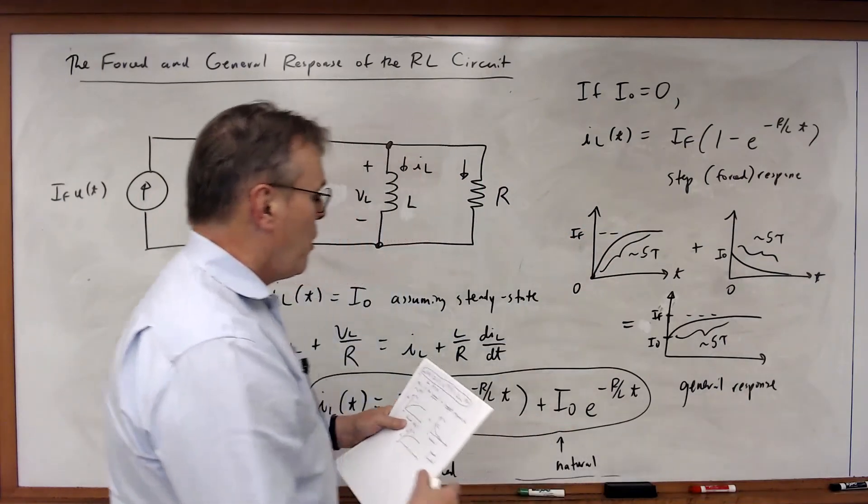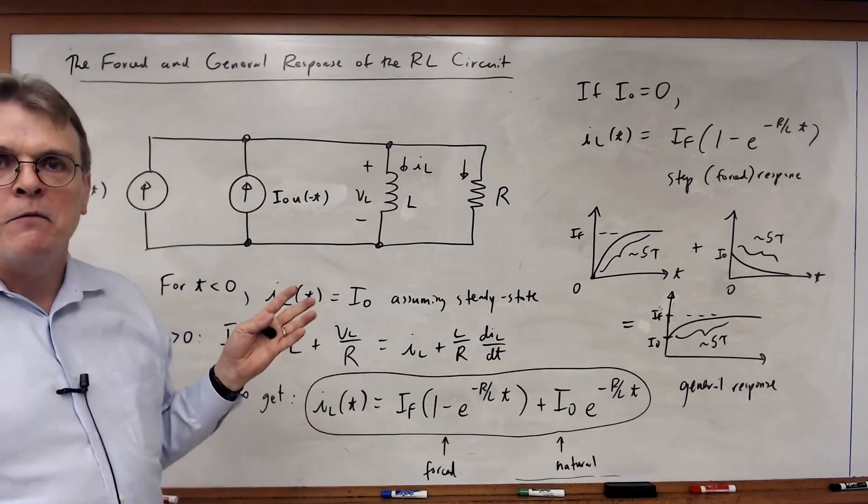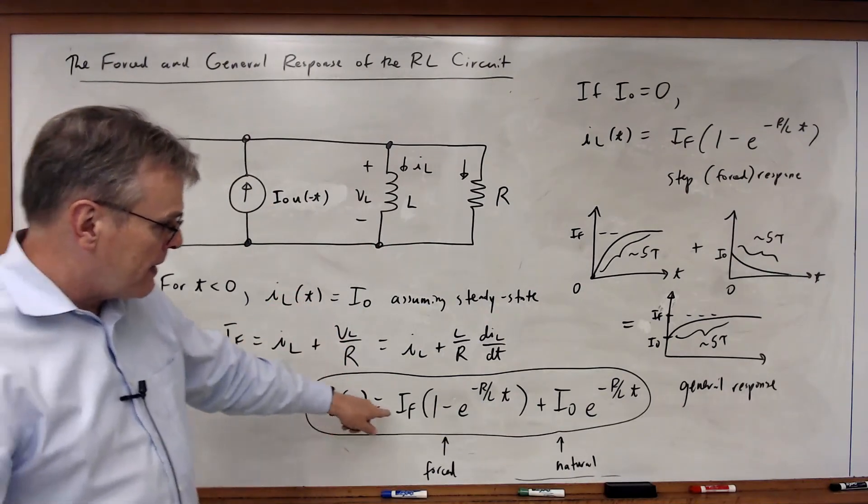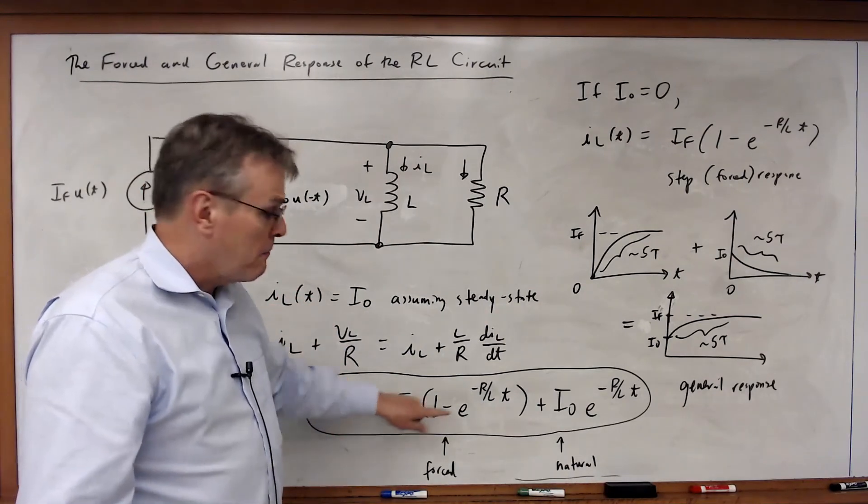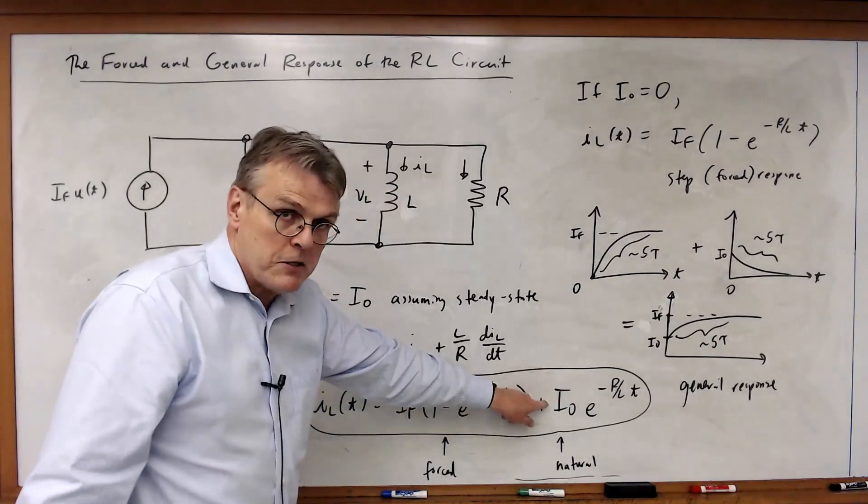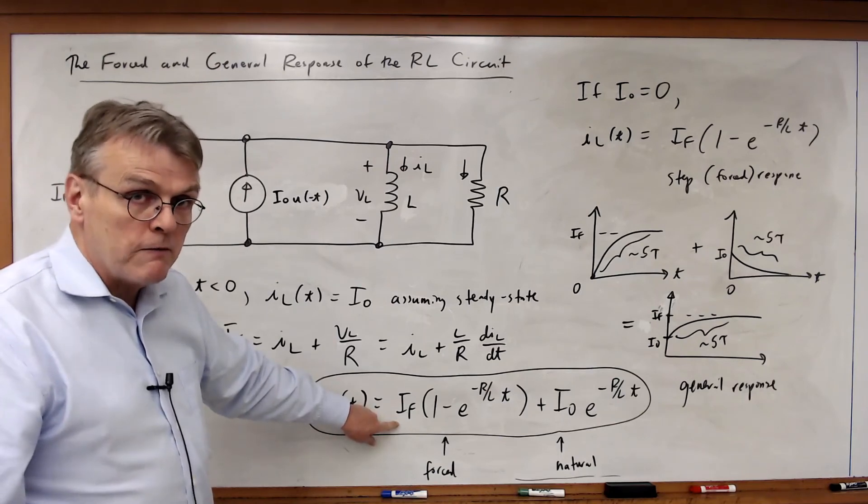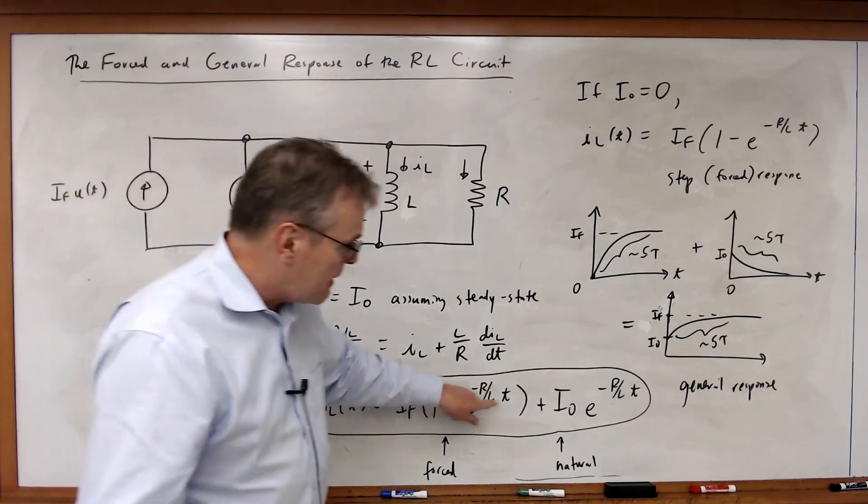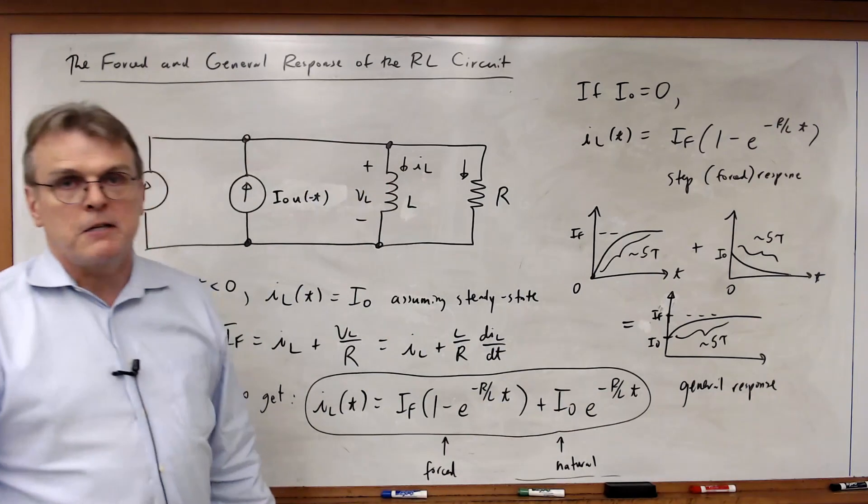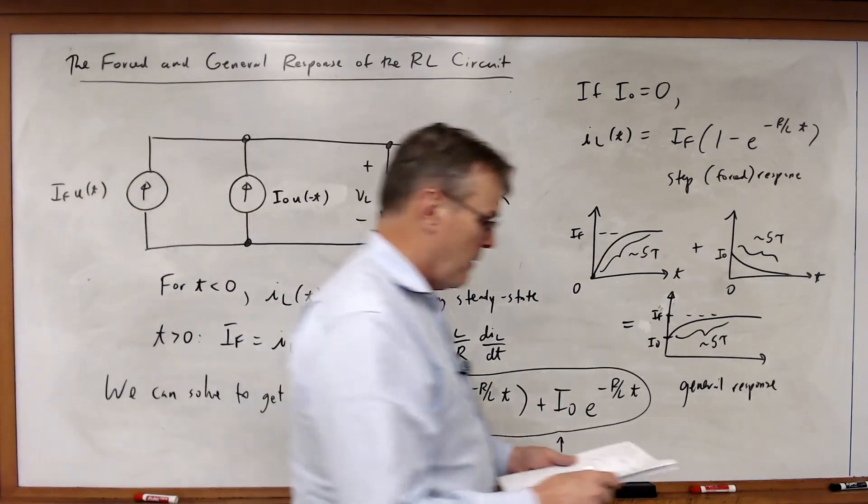So we're going to find our general response by finding the initial condition, assuming steady state. Our final condition, which we will reach steady state, is T goes to infinity. And then finding the value of R across the inductor.